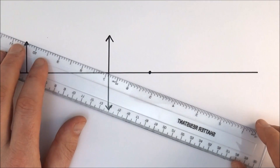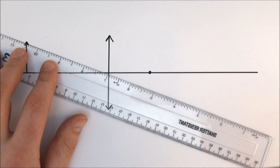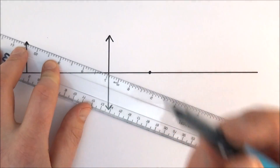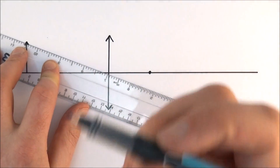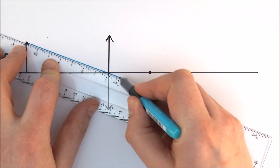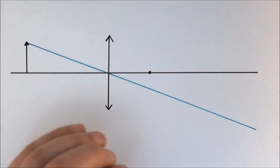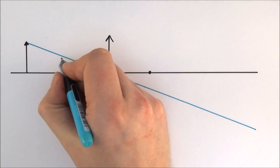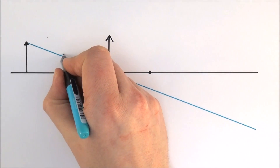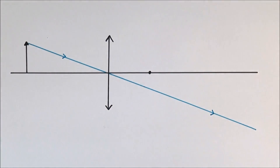Drawing it with a ruler, for ease of construction I'm going to use different colors. I'll use blue for the light that comes from the top of the object, goes through the center of the lens, and then just keeps moving in a nice straight line. I'll also put a couple of arrows to show which way that ray is traveling.